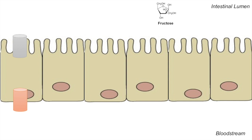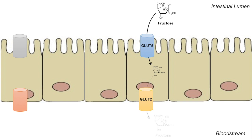When we have free fructose, it is absorbed from the intestinal lumen into an intestinal endothelial cell through the GLUT5 transporter. Once it's in the endothelial cell in the intestine, it is transported out through GLUT2 into the bloodstream.